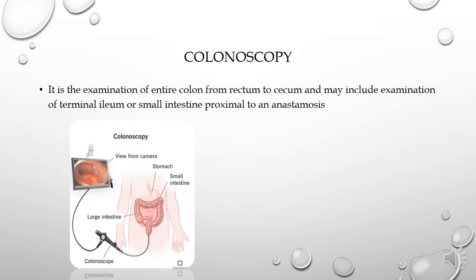So what is colonoscopy? It is the examination of the entire colon from rectum to cecum, and may include examination of the terminal ileum or small intestine proximal to anastomosis. Colonoscopy is one type of endoscopy procedure. Endoscopy means a tube-like structure called an endoscope is passed into an organ. This endoscope has a camera and light at one end, which helps to visualize inside an organ, and helps in diagnosis and treatment.